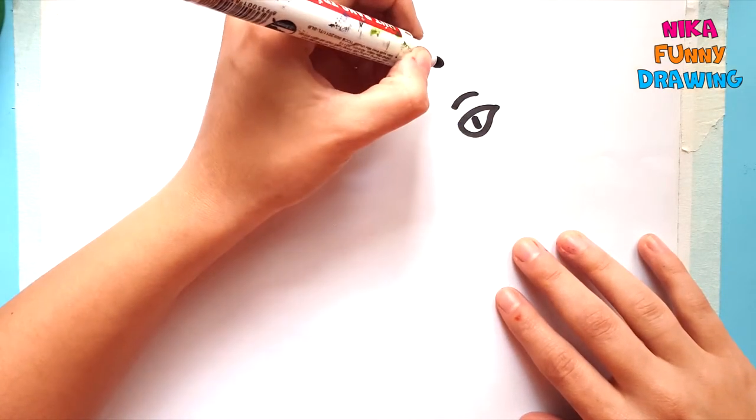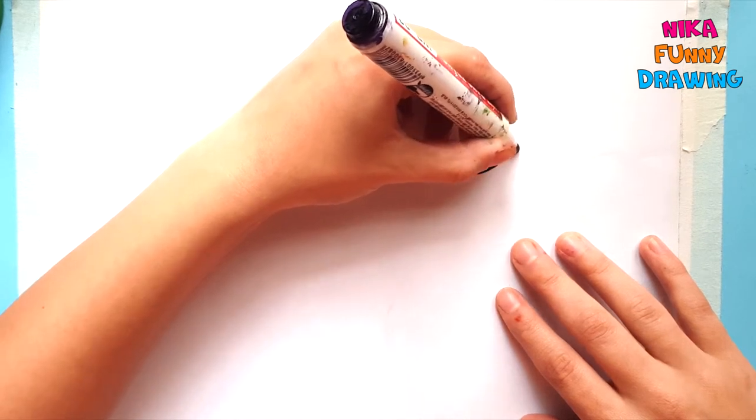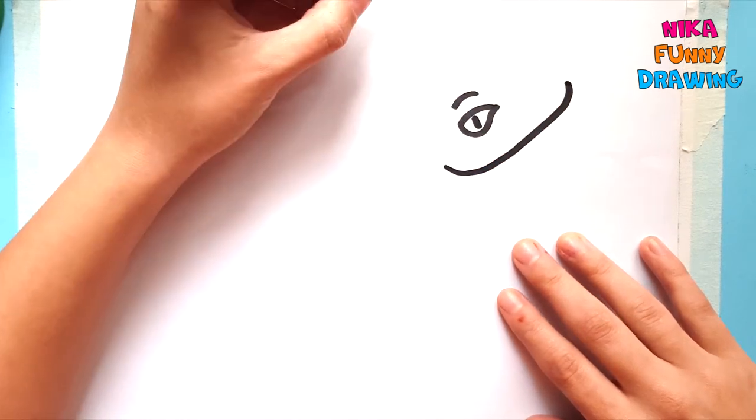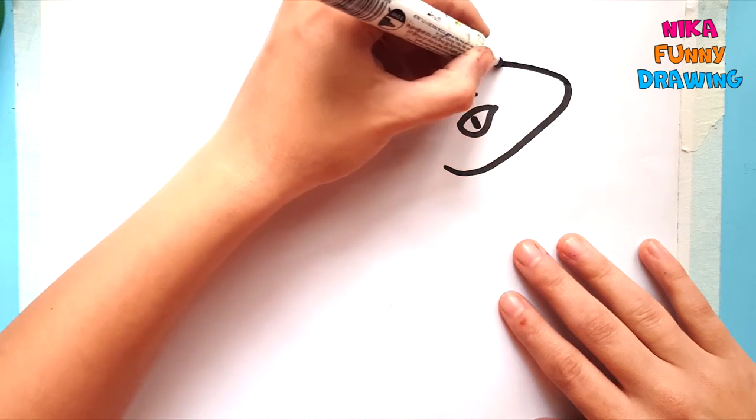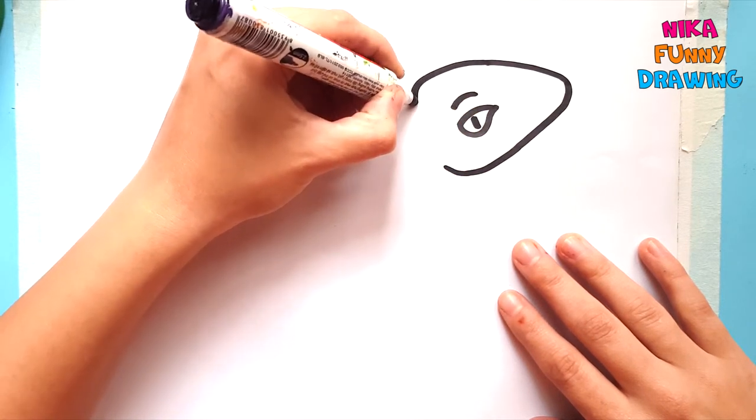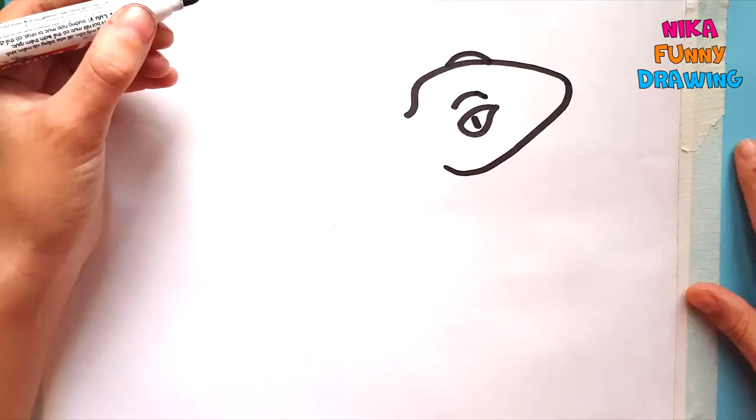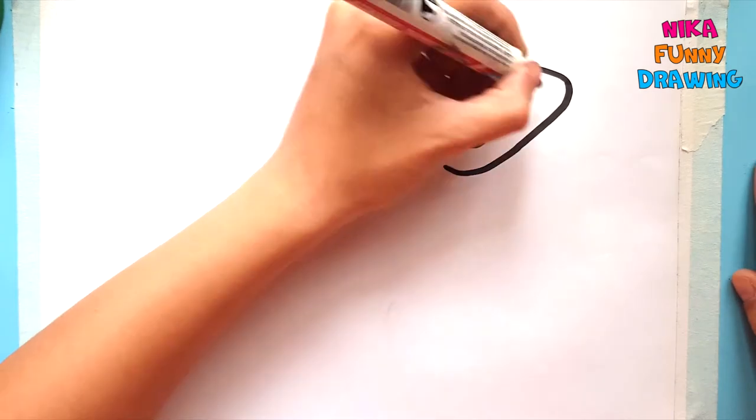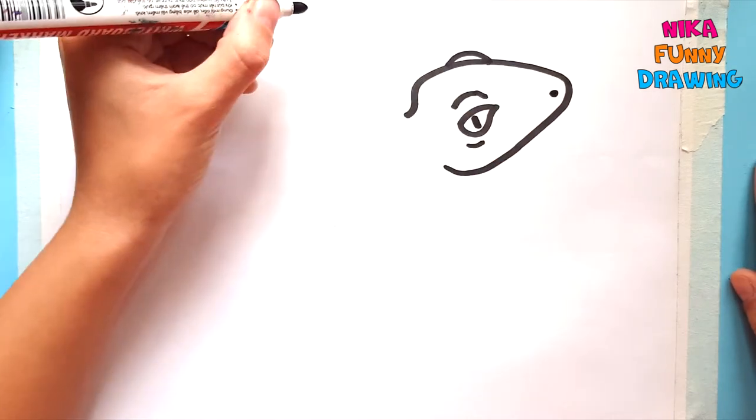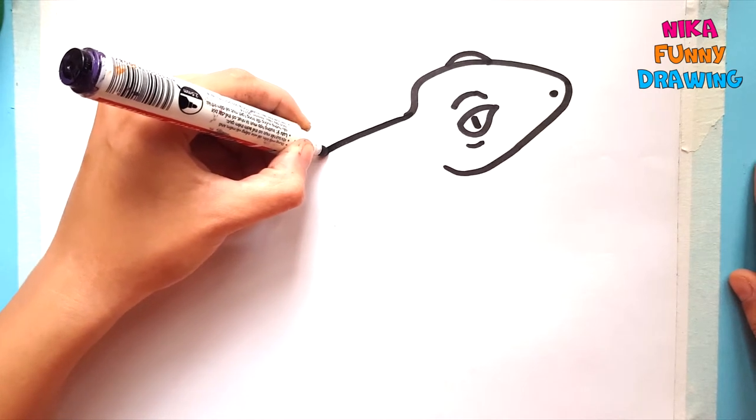Eyebrow. Now we are drawing its head. And a small eye. A nose. And a body.